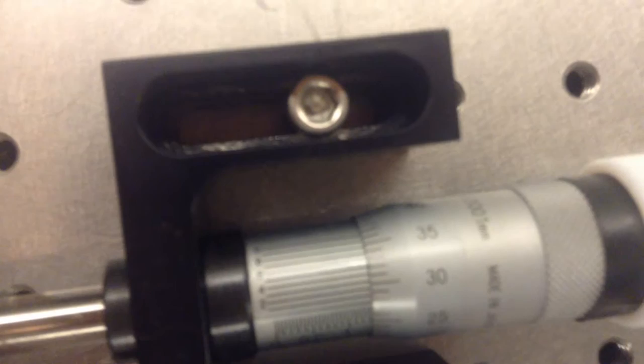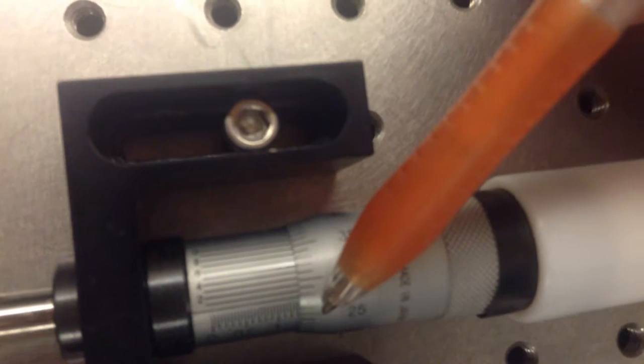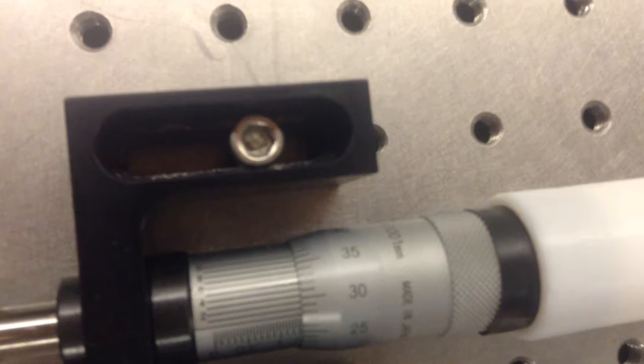Ooh, the extra bit is 0.25, 0.26, 0.27. It's 0.27 something. So it's 1.327.